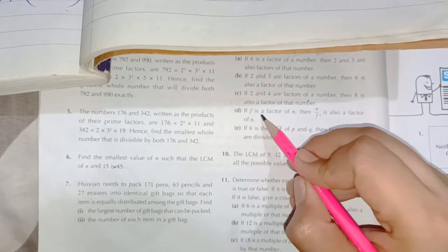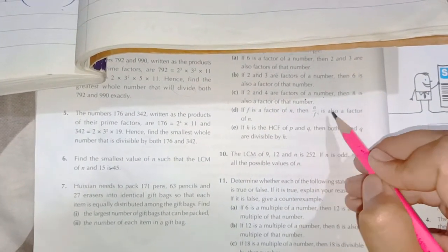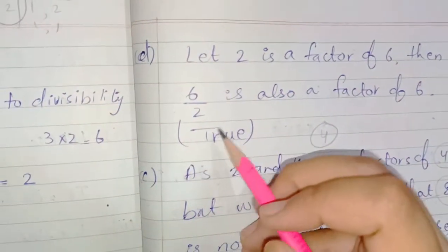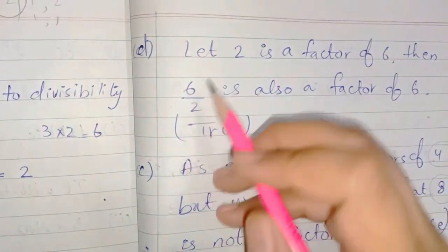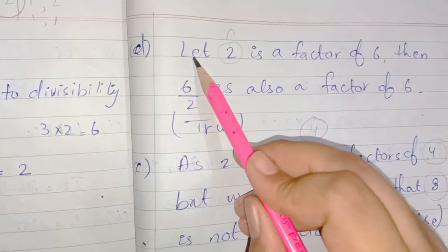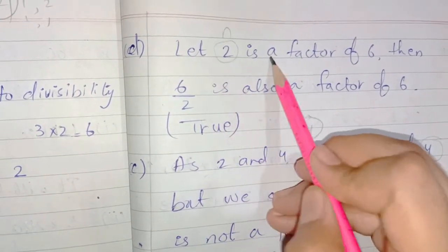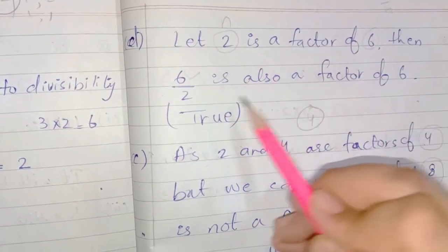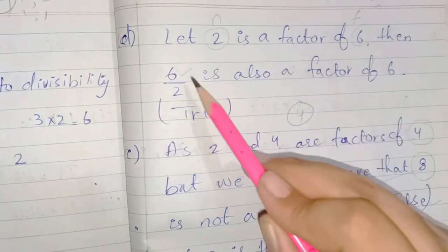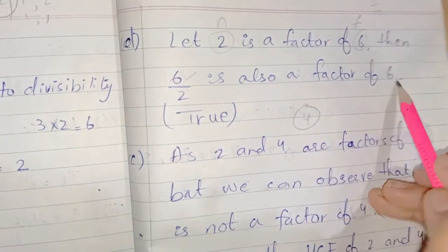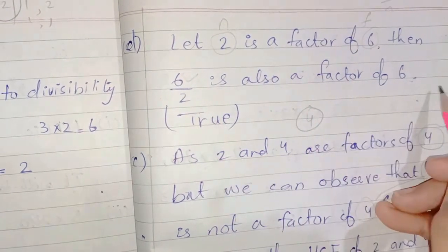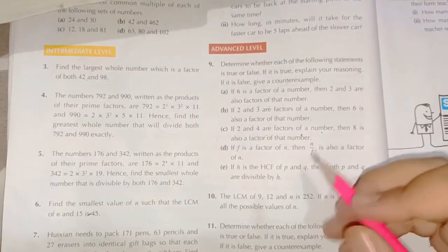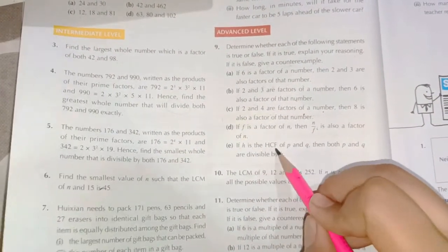Statement D: if f is a factor of n, then f divided by n is also a factor of n. Taking an example: if n = 2 is a factor of 6, then 6 ÷ 2 = 3 is also a factor of 6 — yes, because both are multiples of the same number. So this is a true statement.